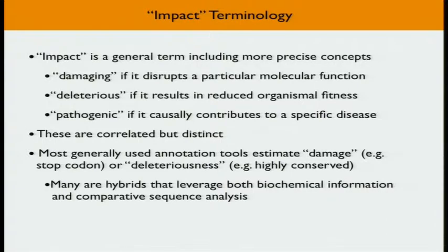It's worth differentiating the categories of terms when we say 'impact.' One way is to talk about 'damage' — for example, PolyPhen will tell you something is damaging to a protein, meaning a variant has an effect on a molecular function. Then there's 'deleterious,' meaning a variant would result in reduced fitness — reduced survival and reproductive success. And of course there's 'pathogenic,' where a variant causally contributes to a specific illness. These are highly correlated terms, but variants that are molecularly damaging and evolutionarily deleterious are heavily enriched among disease-causal variants — though they're not the same thing.